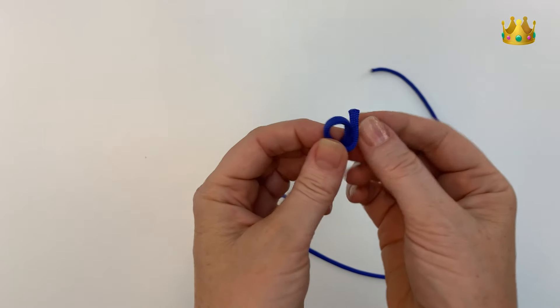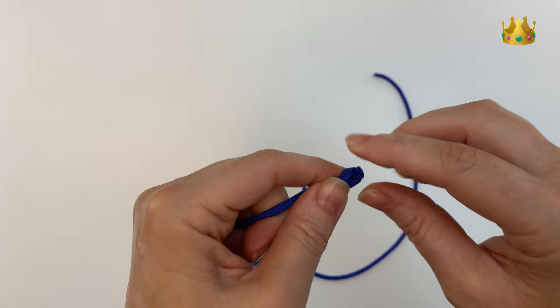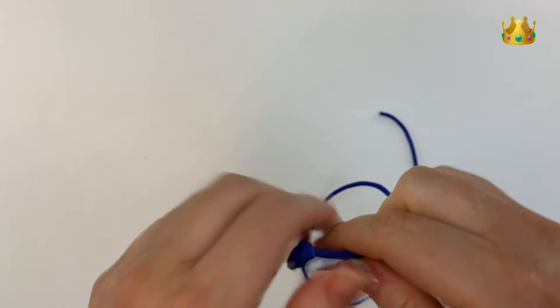So we start by tying a simple overhand knot, bringing the cord around to form a loop and bringing the end through the loop, pulling this down tight right onto the very end of our cord.